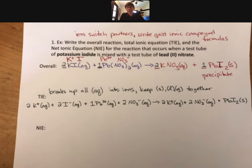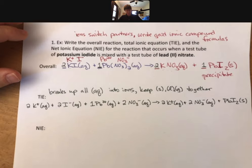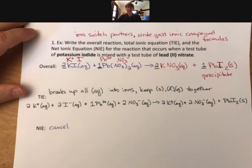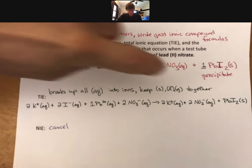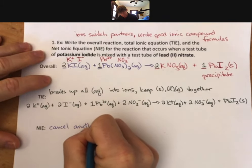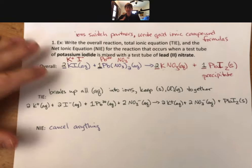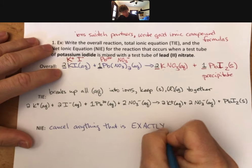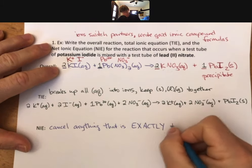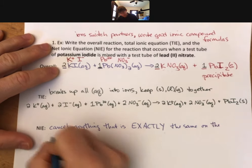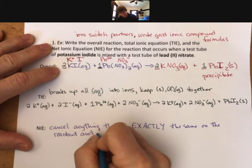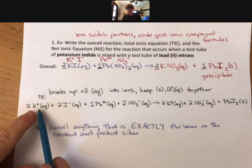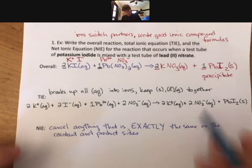And we will see, I think, all of these in time together, because they stay together. They have bonds as we will say. All right, now for the net ionic equation, you're going to cancel anything that is exactly the same on the reactant and product sides. Cancel anything that is exactly the same on the reactant and product sides.